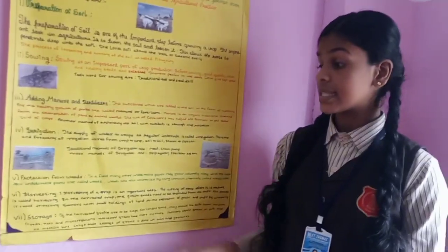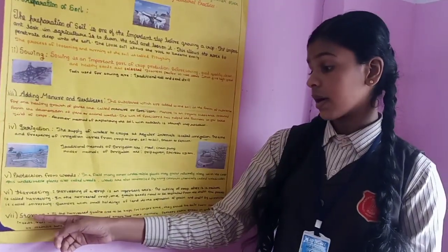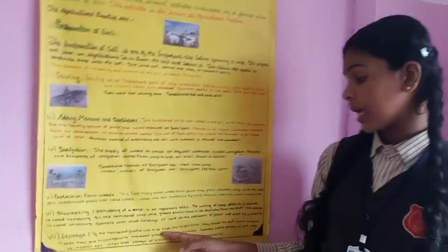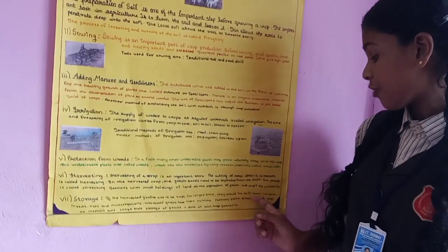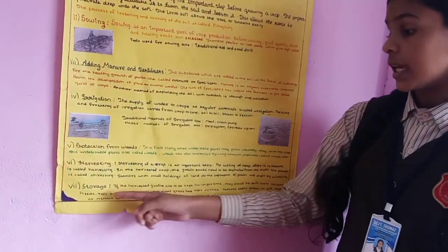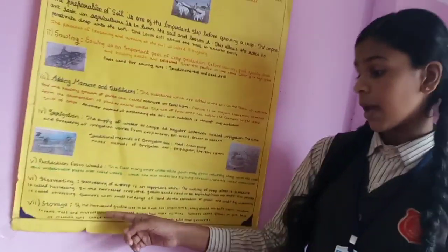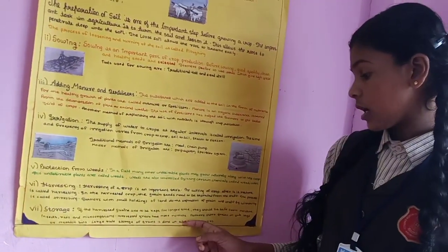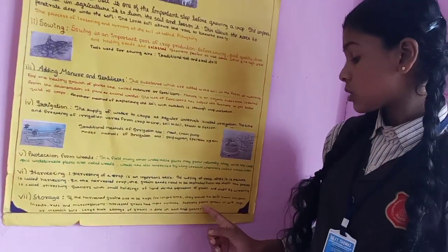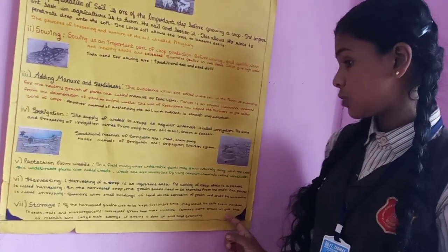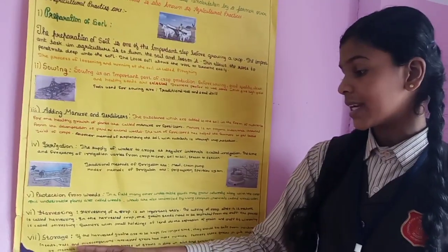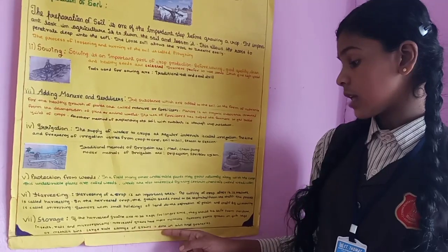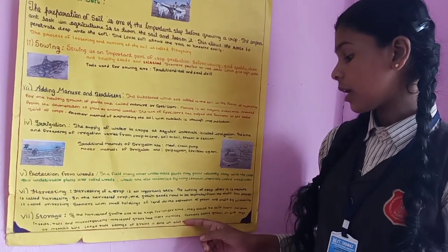The last one is storage. If the harvested grains are to be kept for a longer time, they should be safe from moisture, insects, rats, and microorganisms. Farmers store grains in jute bags or metallic bins. Large-scale storage of grains is done in silos and granaries.